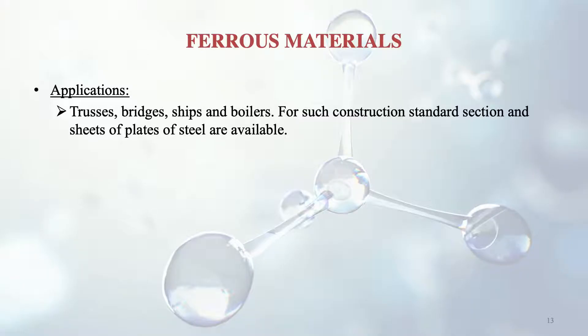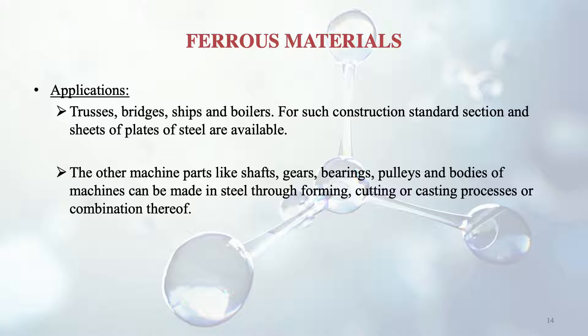Some common applications of ferrous materials include trusses, bridges, ships and boilers, where standard sections and plates of steel are used. Machine parts like shafts, gears, bearings, pulleys and other components are made of steel through processes like forming, cutting or casting, which are also taught in manufacturing science.